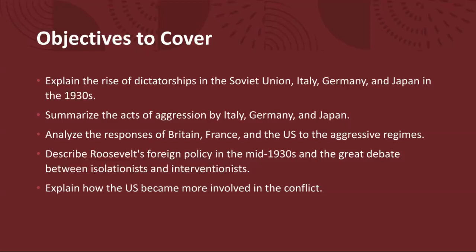Next, we will analyze the responses of Britain, France, and the US — the allies — to the aggressive regimes. Initially, the policy of appeasement prevailed as Western powers sought to avoid confrontation and preserve peace through diplomatic concessions to the aggressors. However, as the threat of war loomed larger, Britain and France began to rearm and adopt a more assertive stance. Meanwhile, the US pursued a policy of neutrality, focusing on domestic concerns and avoiding entanglement in foreign conflicts.